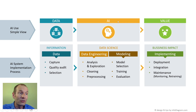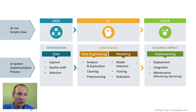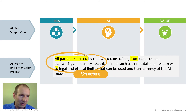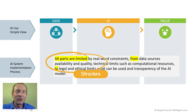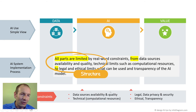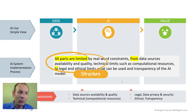Putting it all together, we can express this comparison: the simple view on one side with data, AI, and value, and the same three levels in more detail as a real-world implementation on the other. For the last part of the text — where all parts are limited by some constraints — this is structural information. We can express it simply by placing a rectangle underneath all three parts, showing it addresses all of them without needing to write it out explicitly.